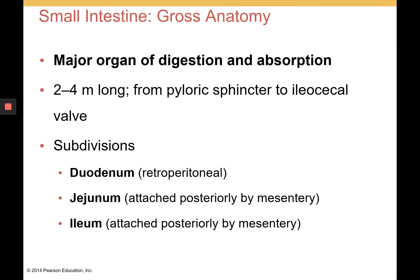Now we're going to talk about the small intestine and look at its gross anatomy first. It's the major organ of digestion and absorption — most absorption takes place in the small intestine. It's about two to four meters long and goes from the pyloric sphincter to the ileocecal valve. It has three parts: the duodenum, which is retroperitoneal and the shortest part, followed by the jejunum and ileum, which are attached to a mesentery.